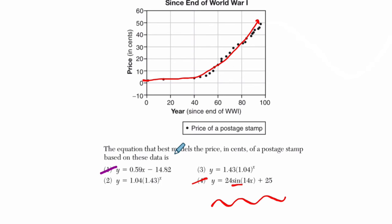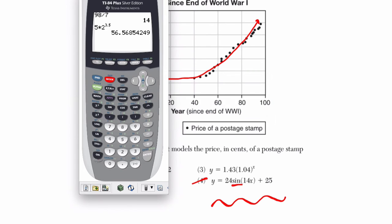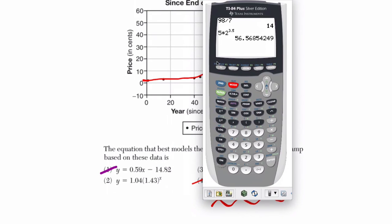Instead, what you can do really quickly on the calculator is to plug them in. Press y equals, clear up any old equations. I'm going to plug this one in first. 1.04. Now, it starts at $1.04. That's what it's saying. Oh, sorry. No. It starts at 1.04 cents. This is a price in cents. That could be a reasonable number right there.